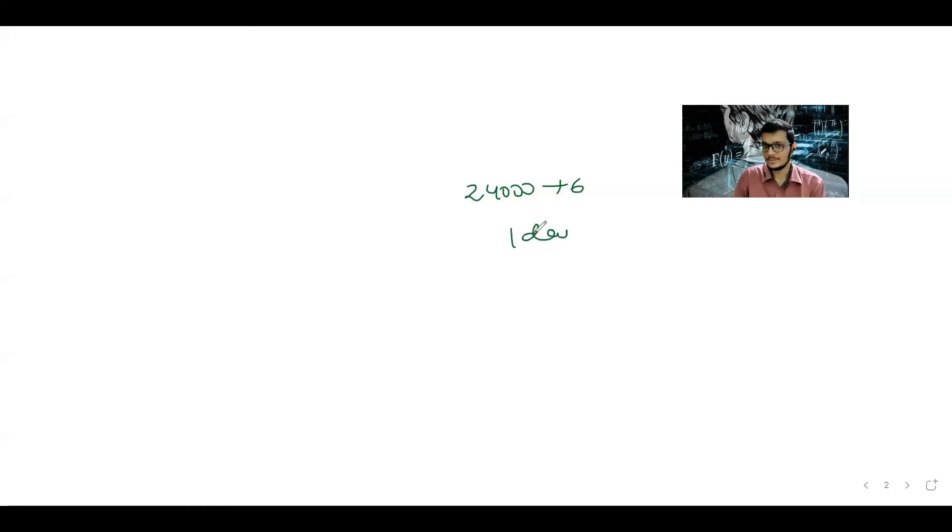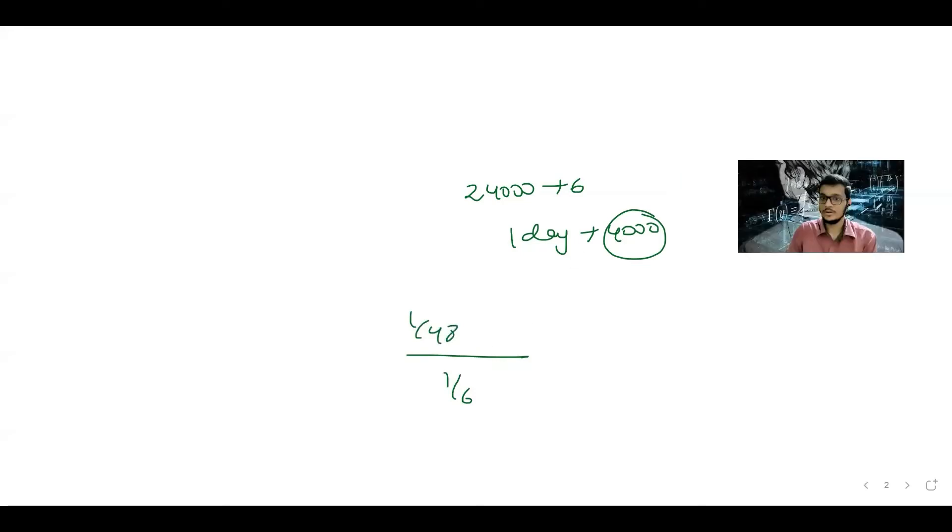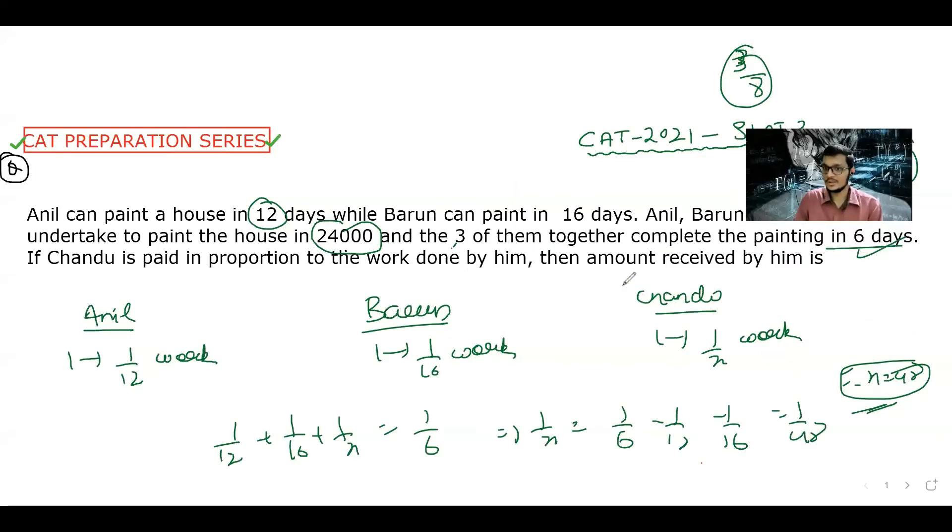In one day, Anil works 1/12, Barun works 1/16, and together all three work 1/6. From this we can find Chandu works 1/48 per day. Now for payment: they get 4,000 per day total. The ratio of work is used to divide payment. Chandu gets 1/48 share.